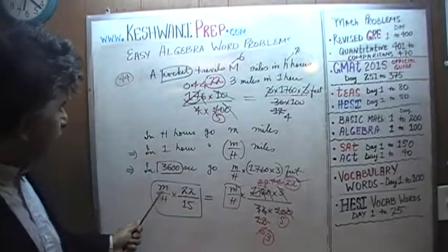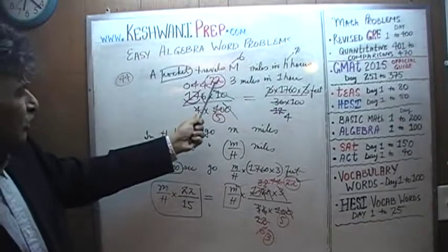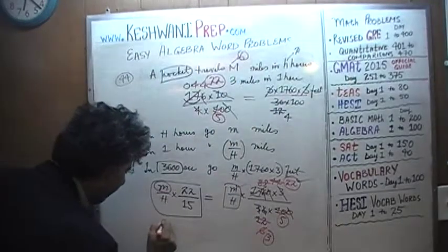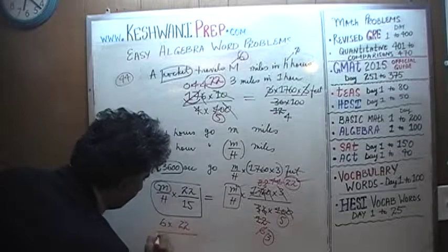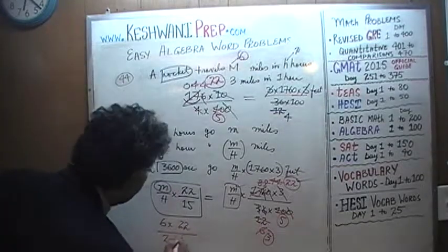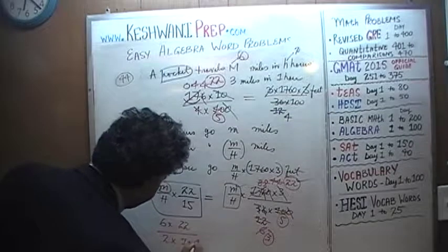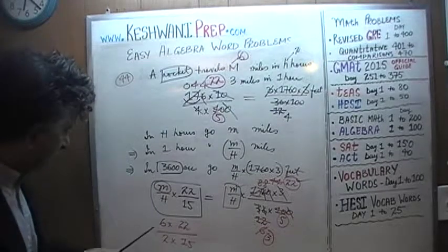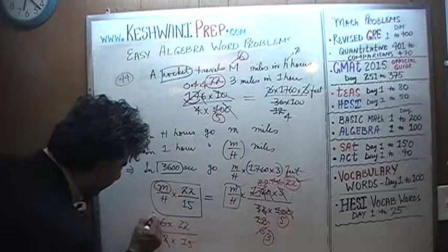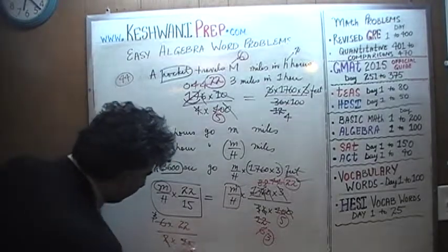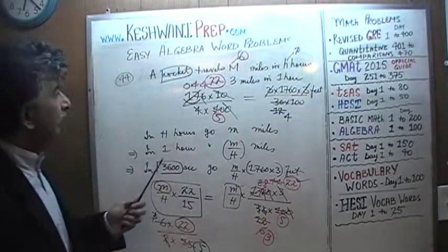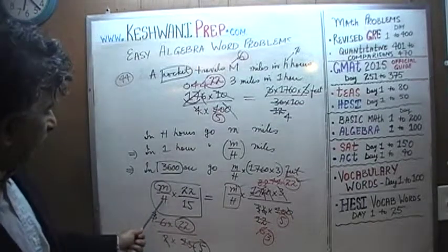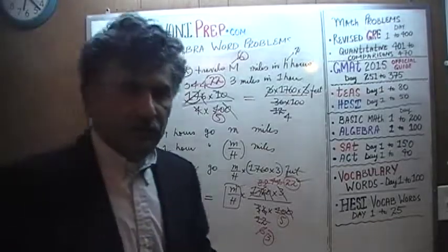Let's plug in the values: m=6 and h=2 into our final answer, 22m over 15h. That gives 6 times 22 over 2 times 15. The 6 and 2 cancel to give 3, and 3 cancels with 15 to give 5 — so we get 22 over 5. That is exactly what we computed directly: 22 over 5. We get the same answer, which tells us our answer 22m over 15h is correct.